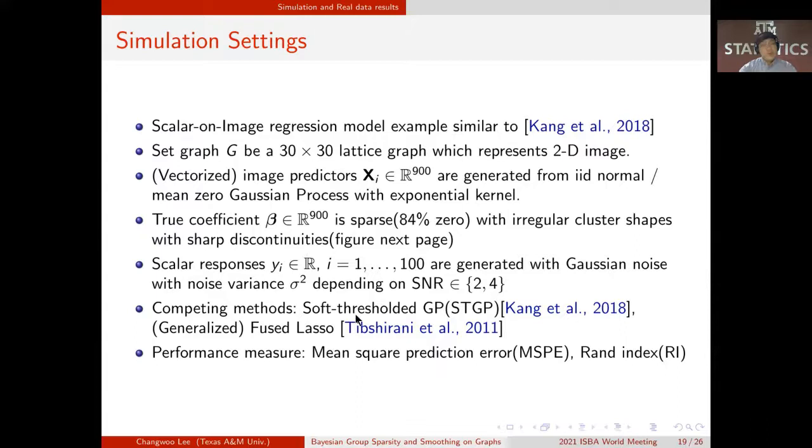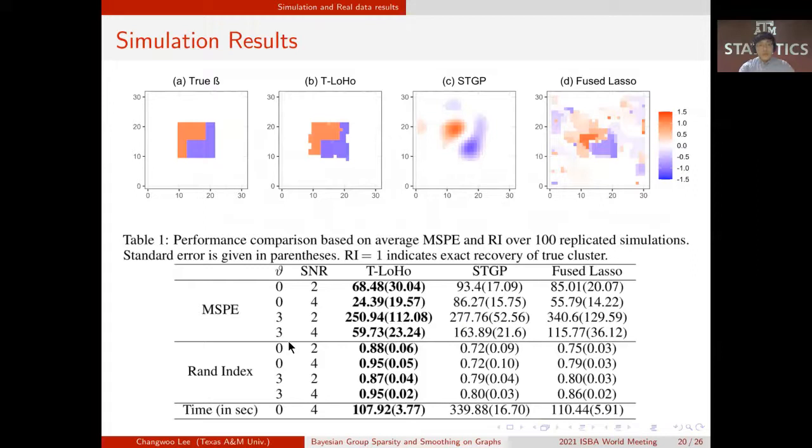The unknown image coefficients beta lies on a graph which is sparse and has irregular cluster shape with sharp discontinuities. Competing methods are soft-thresholded Gaussian process and Fused Lasso model, so that we compared mean square prediction error and RAND index to measure predictive and clustering accuracy. The result is shown as follows, and we can see that T-LoHo gives the best result, both in terms of MSPE and RAND index, under the different setting of dependency in design matrix and signal-to-noise ratio.